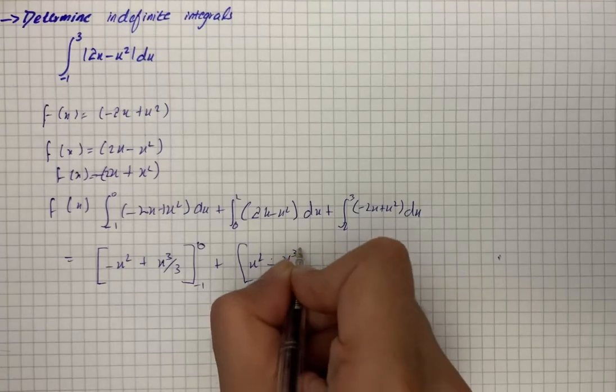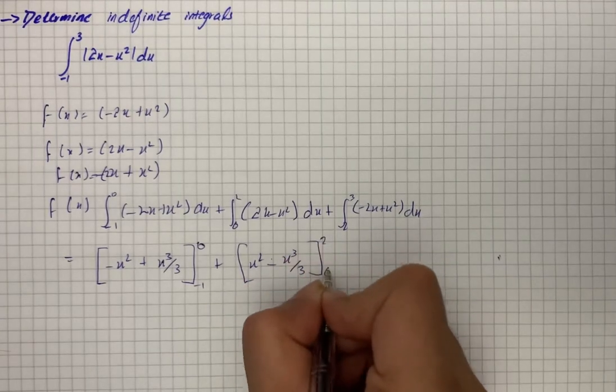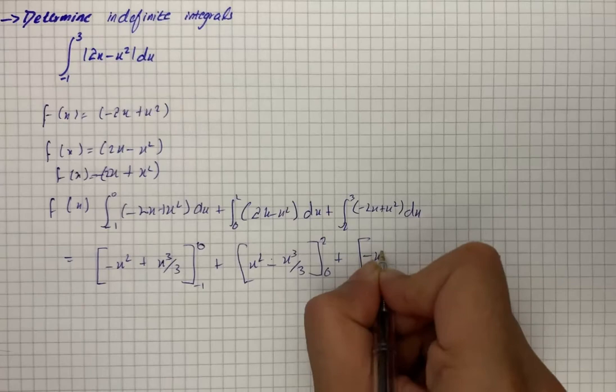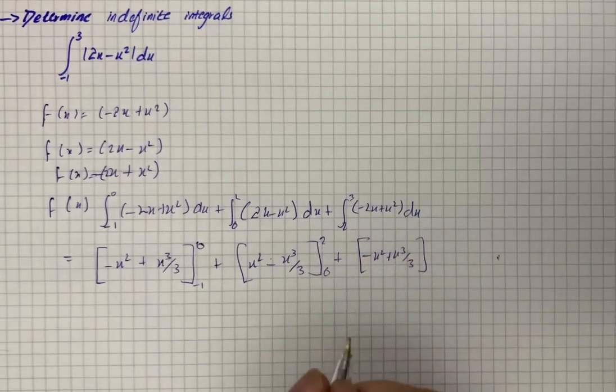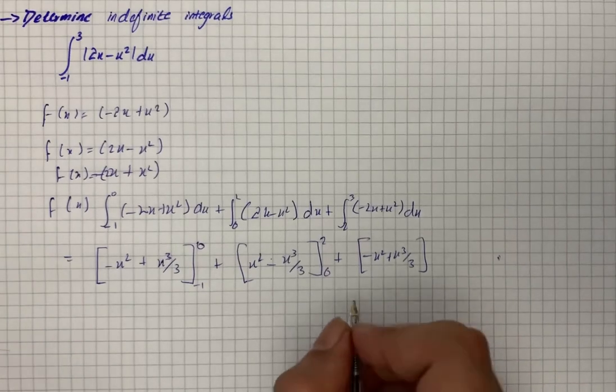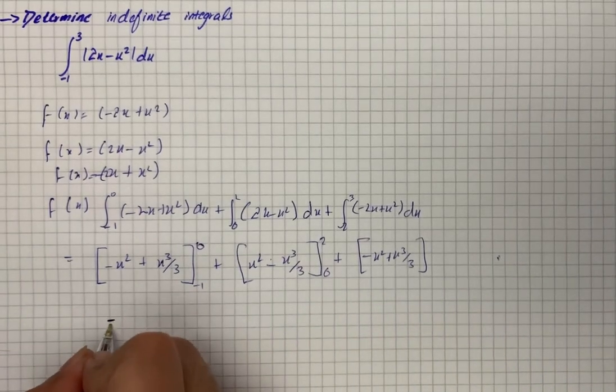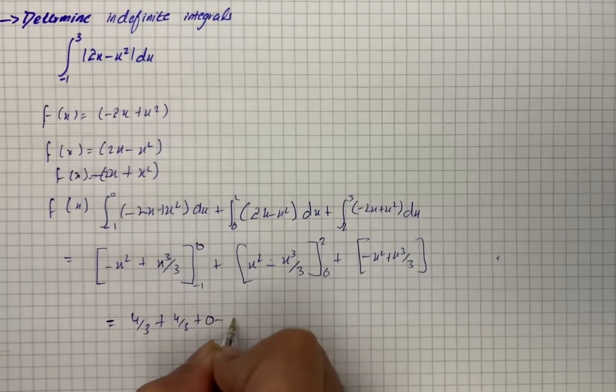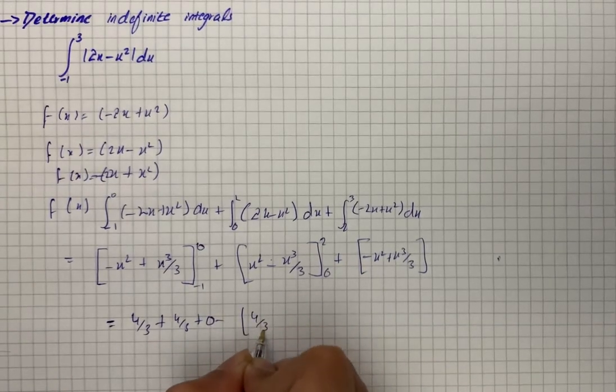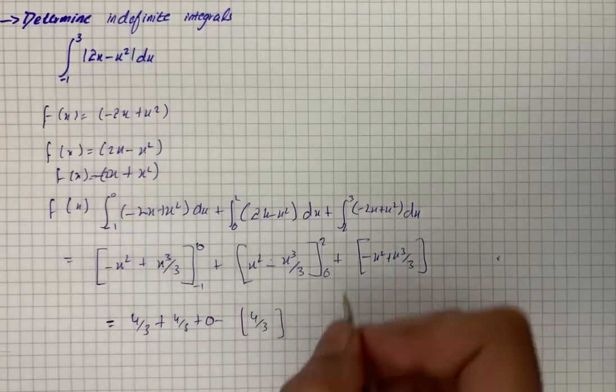So we add up minus x squared plus x cubed by 3. On simplification it will give us 4 by 3 plus 4 by 3 plus 0 minus 4 by 3. We take it up over here.